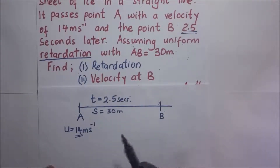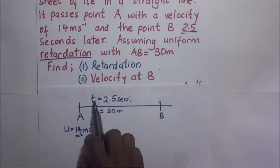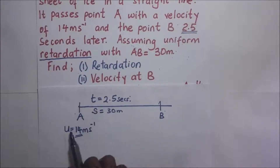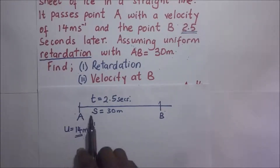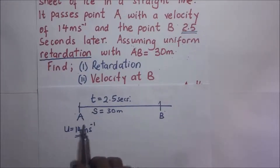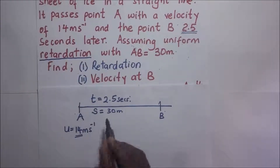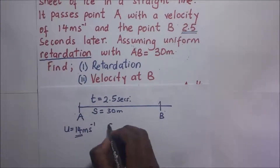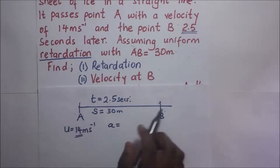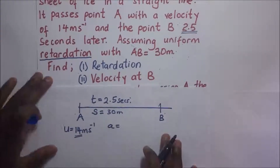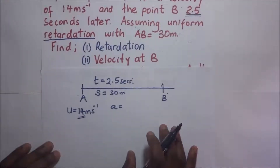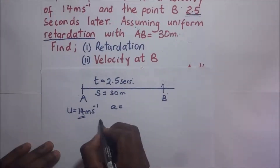We have the displacement s, the time, and the initial velocity u. From our equations of constant acceleration, we shall choose an equation that satisfies all these known values to give us the value of a. Since the body is retarding, we definitely expect our value of a to be negative. So we shall pick the displacement equation.